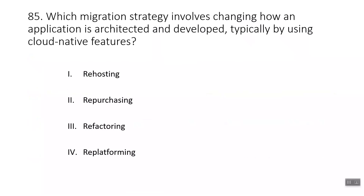Question eighty-five: which migration strategy involves changing how an application is architected and developed, typically by using cloud-native features? The answer is refactoring. Re-hosting is migrating on-premises applications to the cloud without modification. Repurchasing is replacing an existing application with a cloud-based version. Re-platforming involves selectively optimizing aspects of an application without changing its core architecture.